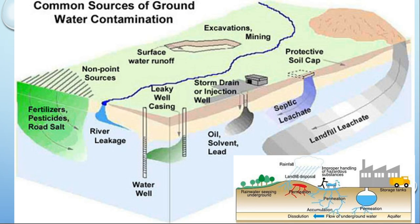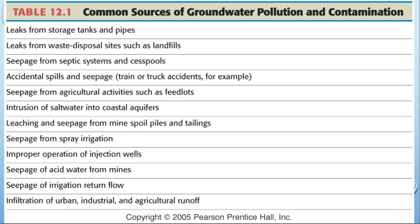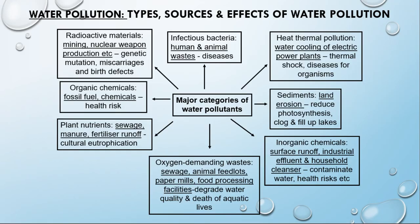We talk a lot in the course about surface water, but I'm highlighting groundwater here because the majority of the water we actually deal with — especially city water — is coming from aquifers. Here's just a list of different ways that you can contaminate groundwater. Here is also a concept map overview of the major categories of water pollutants.